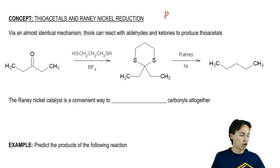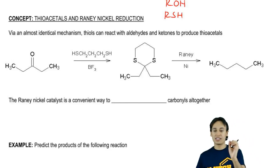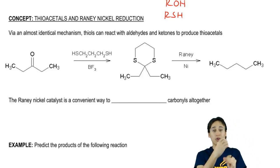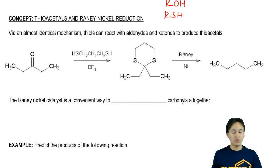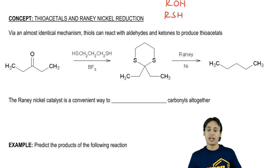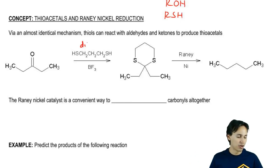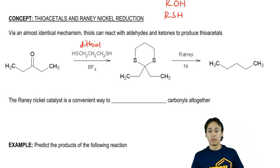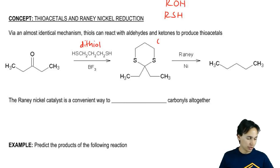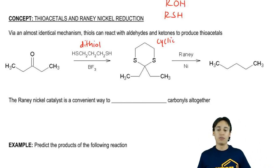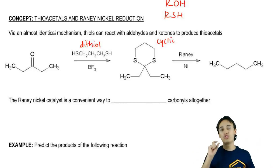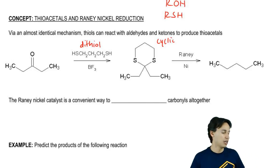A thiol is just a group that's RSH, which is really the same thing as ROH. Remember that S is right below O on the periodic table — it even reacts very similarly, with those two lone pairs and everything. You can see that I have my carbonyl and I'm reacting it with what's actually called a dithiol here. You don't always have to react with a dithiol, but if you want to get a cyclic thioacetal, then you need to use a dithiol. If you want to get an acyclic one, then you would use two equivalents of just a regular thiol.